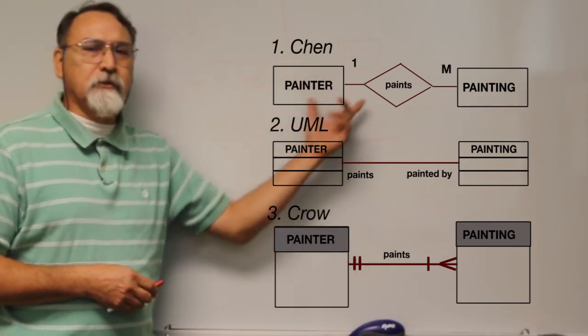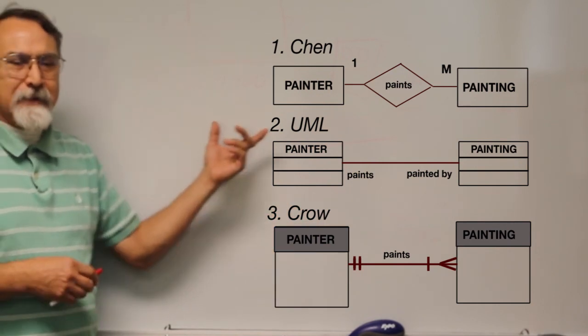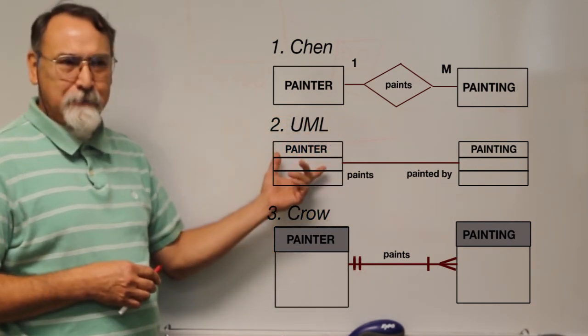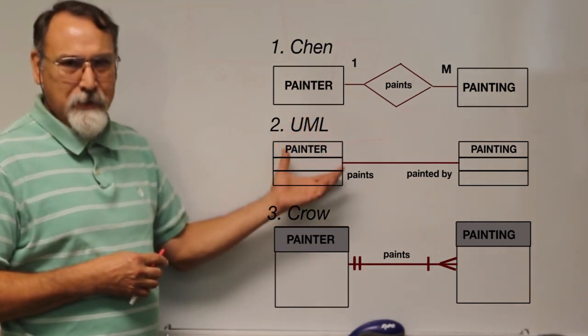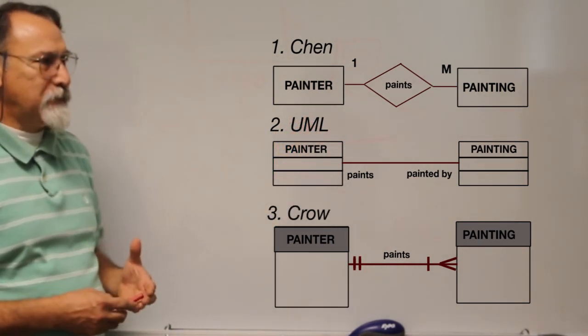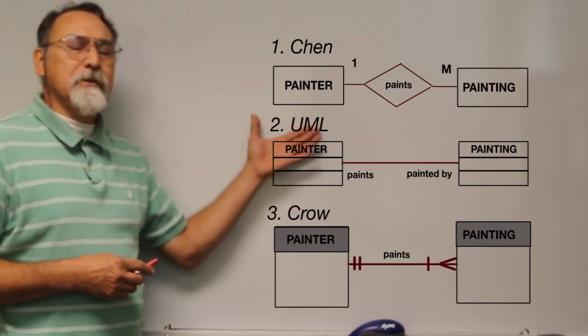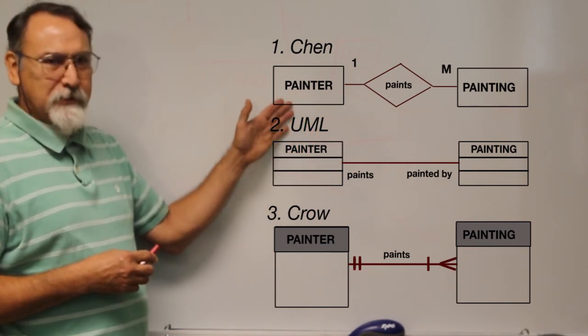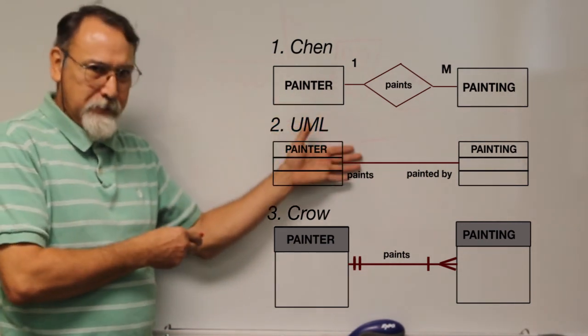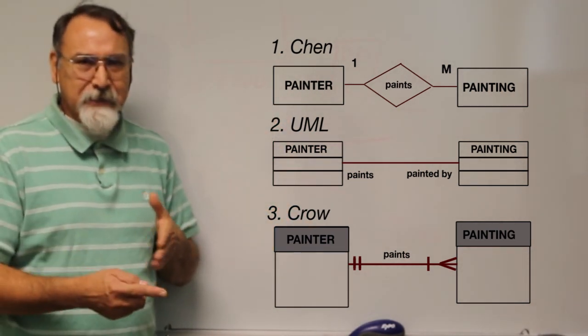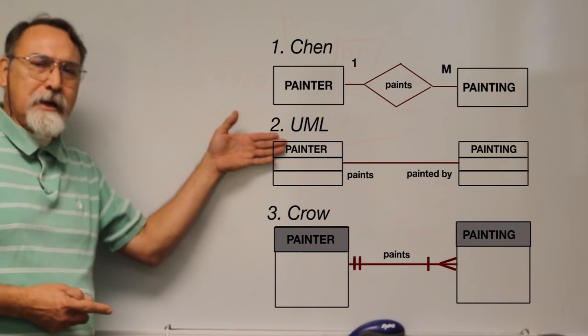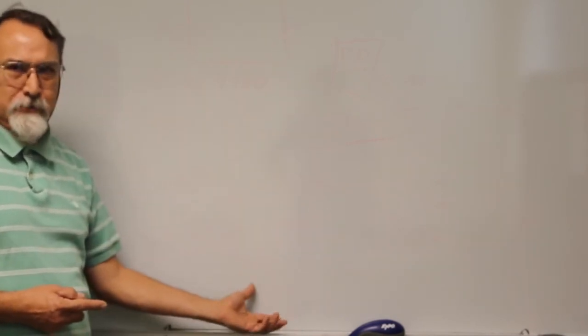When you see a UML structure, or you see a Chen structure, or you see a Crow structure as a representation of how things are going to happen, there is an implied infrastructure that's supporting that methodology. So one of the things you have to consider is that the symbolism is a representation of what you're going to build, but also the symbolism carries with it the idea of an underlying structure that is required to support the methodology that you're doing. And that concludes chapter two.